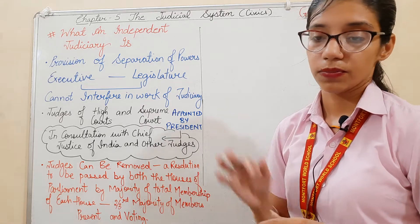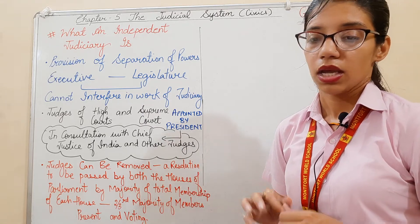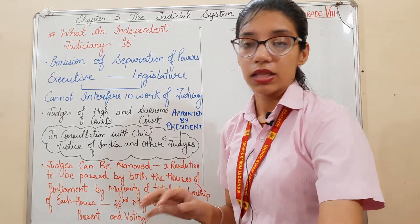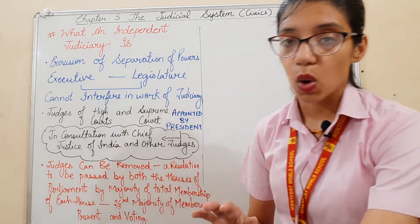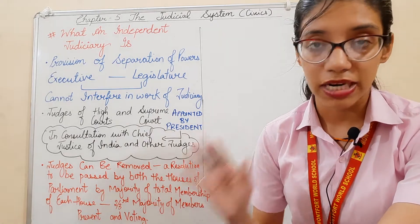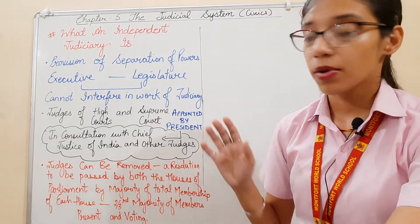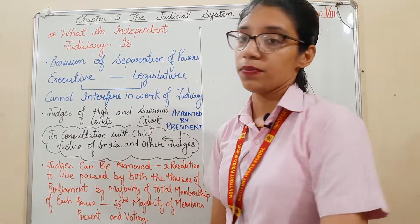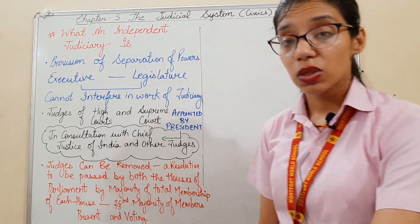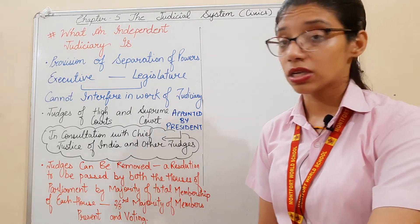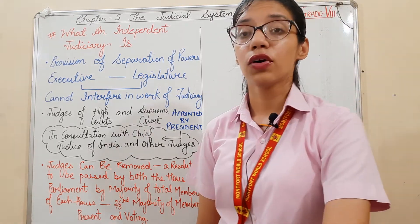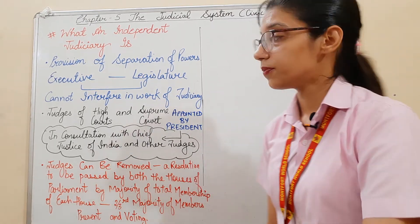This is the rule. The courts are not under the government. They don't act on any government's behalf because there is a separation of power. The executive and the legislature cannot interfere in the work of the judiciary.